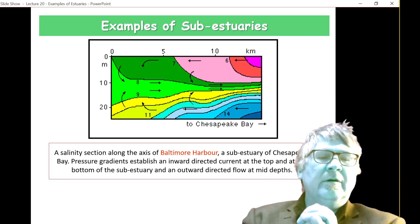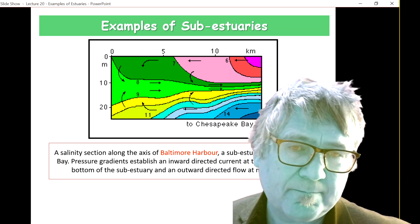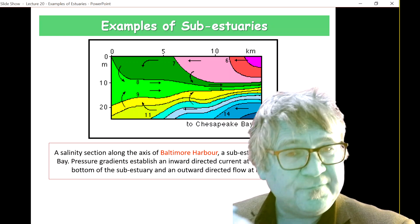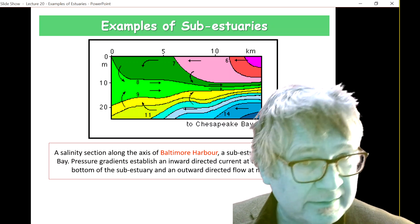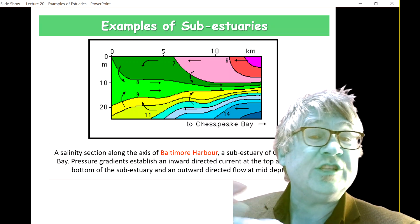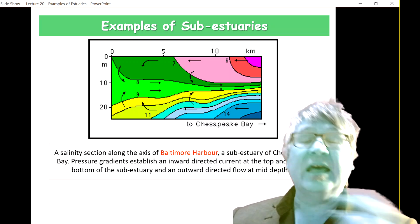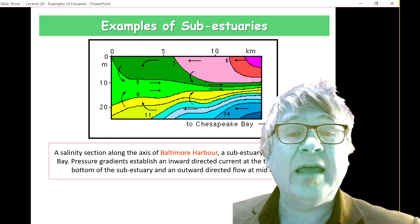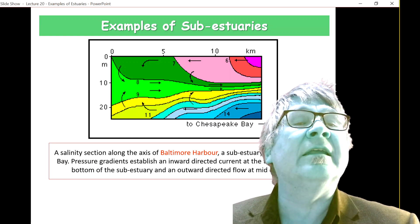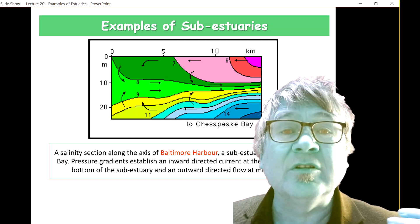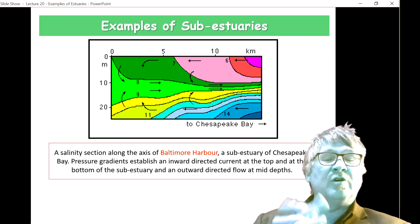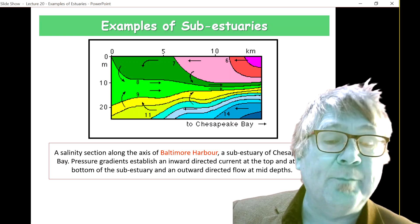You remember we talked about Chesapeake Bay. There is a video on the tides with some examples. Chesapeake Bay is a large, slightly stratified estuary, but it has a main channel as the parent estuary, and then all the river arms are called so-called sub-estuaries. This one sub-estuary is called Baltimore Harbor.